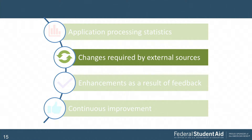Moving on to changes required by external sources — when we make changes to FAFSA, the mobile app, and any FAFSA-related products, those changes derive from many sources: data, community input, advisory groups, and user feedback. But sometimes our stakeholders make changes and as a result we have to change to align with them.